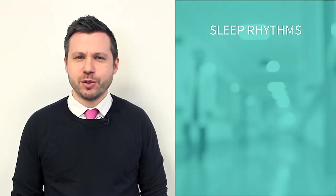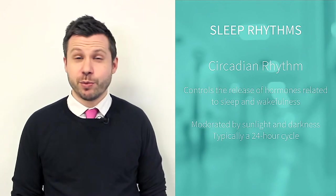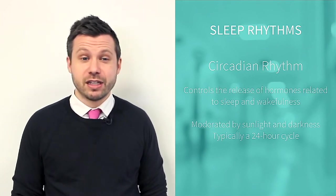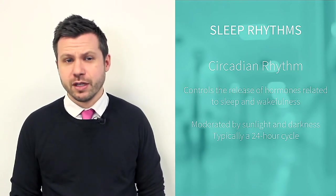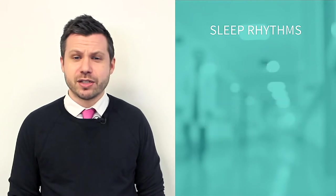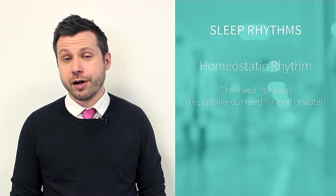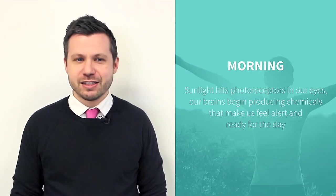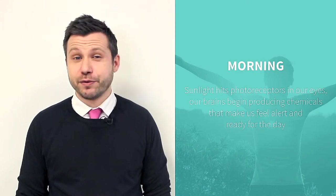Our sleep is governed by two biological rhythms. Our circadian rhythm controls the release of hormones related to sleep and wakefulness. It is moderated by sunlight and darkness, and typically is a 24-hour cycle. The other rhythm that affects our sleep is our homeostatic rhythm, which is our need for sleep, just like our need for food or water. In the morning, when sunlight hits photoreceptors in our eyes, our brains begin producing chemicals that make us feel alert and ready for the day.